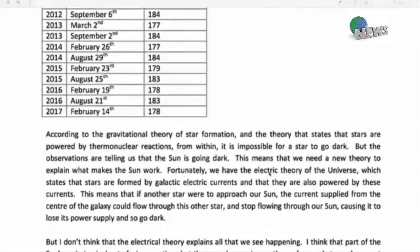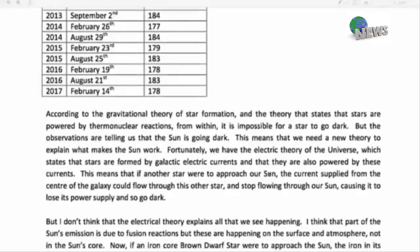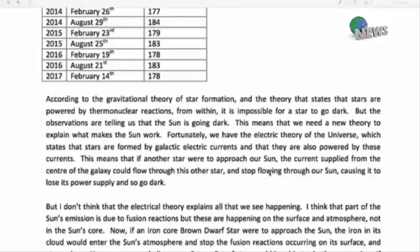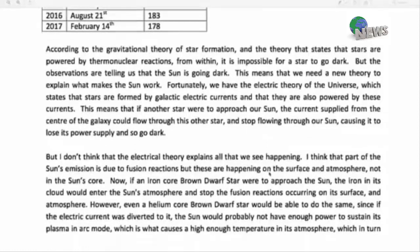According to the gravitational theory of star formation and the theory that states that stars are powered by thermonuclear reactions from within, it is impossible for a star to go dark. But the observations are telling us the sun is going dark. This means that we need a new theory to explain what makes the sun work. Fortunately, we have the electric theory of the universe which states that stars are formed by galactic electric currents and that they are also powered by these currents. This means that if another star were to approach our sun, the current supplied from the center of the galaxy would flow through this other star and stop flowing through our sun, causing it to lose its power supply and go dark.